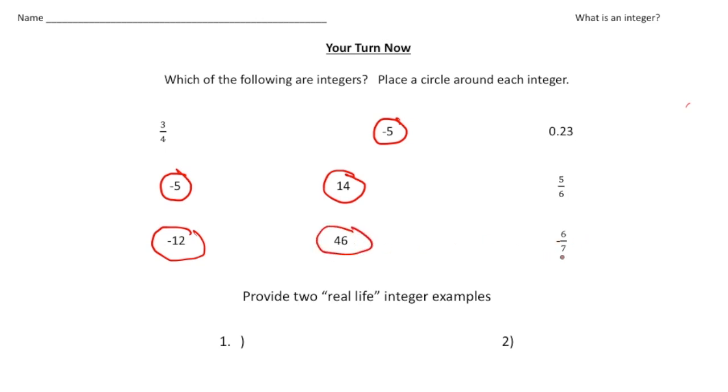And then you had to write down two real-life examples of integers. And for me, I could say the number of runs scored in a baseball game. Or say the temperature on a thermostat. For example, let's say the temperature was 45 degrees. Well, 45 is a whole number, which makes it an integer. It's not a fraction.